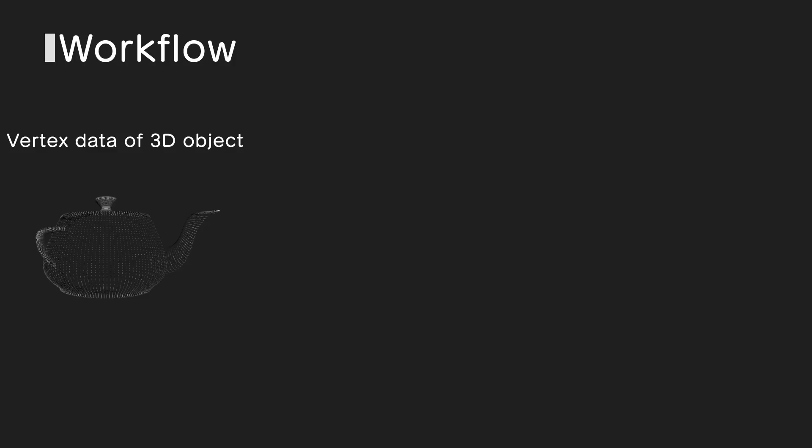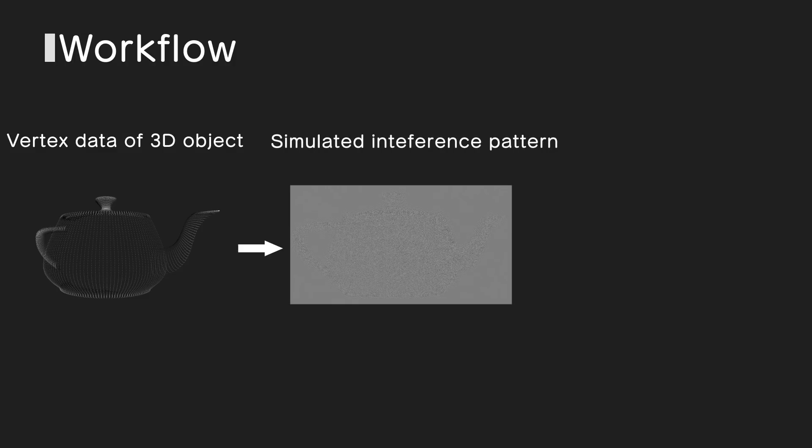We prepare the vertex data of a 3D object, then the interference pattern of the vertex data is simulated and the pattern is reconstructed to obtain a 3D image.